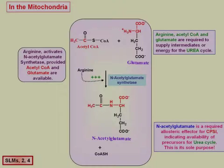The only purpose of N-acetylglutamate is to activate that first reaction — the combination of ammonium ion with bicarbonate to form carbamoyl phosphate. All it's doing is saying everything is ready to go, all precursors are present, so let's make some urea. The half-life of NAG is about 20 minutes to an hour; it gets transferred out into the cytosol and degraded.